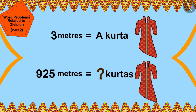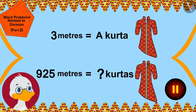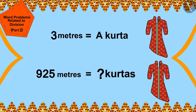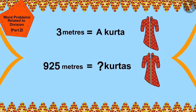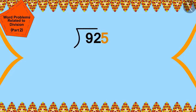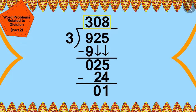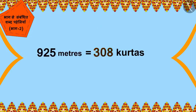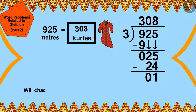Children, can you help Cha Cha find a solution? If you wish to, you can pause the video and find the answer. To find the solution to this question we will use the process of division. We can divide 925 by 3. Cha Cha can make 308 kurtas for the wedding guests.